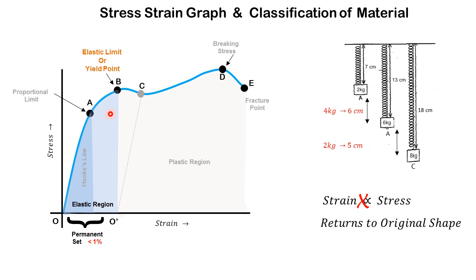In this part AB of the graph, we find that the material does not obey Hooke's law, i.e., strain is not proportional to stress. However, the material is still elastic in this region, which means if you remove the stress the material returns to its original shape.